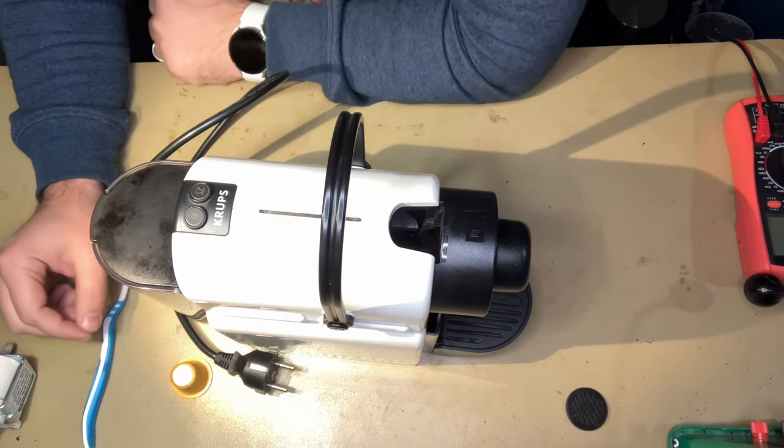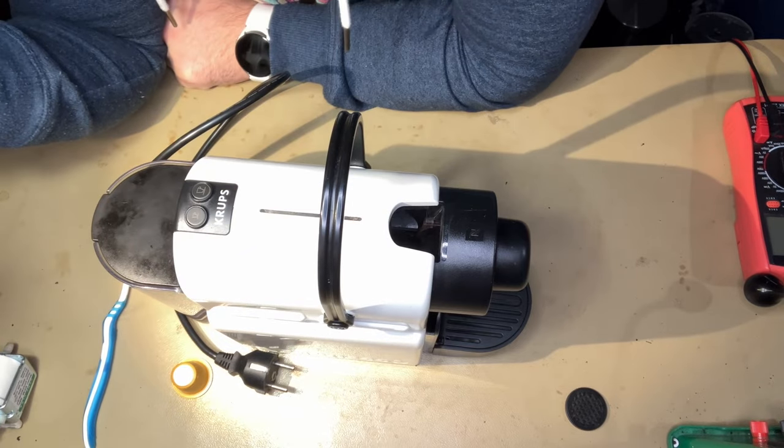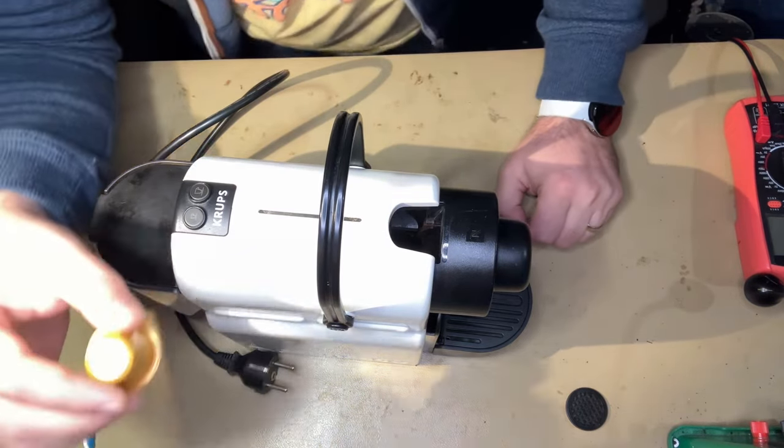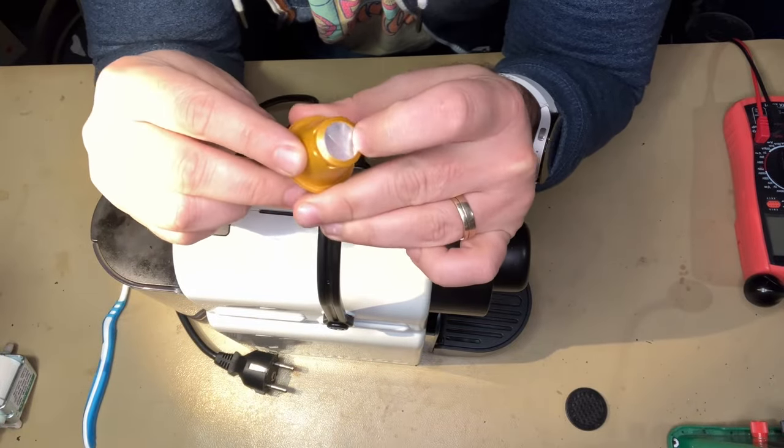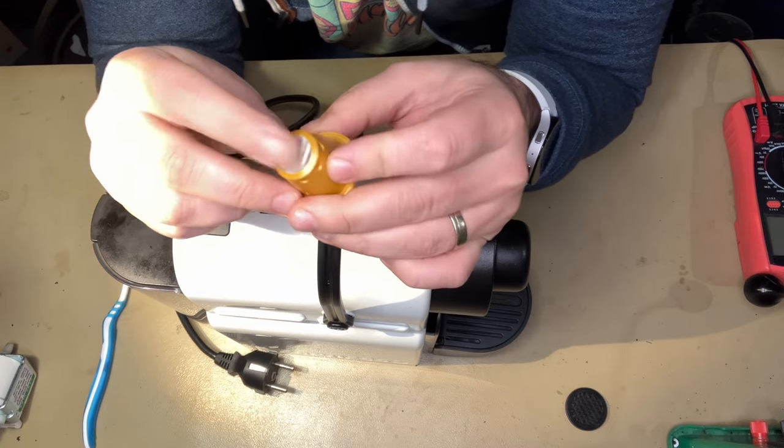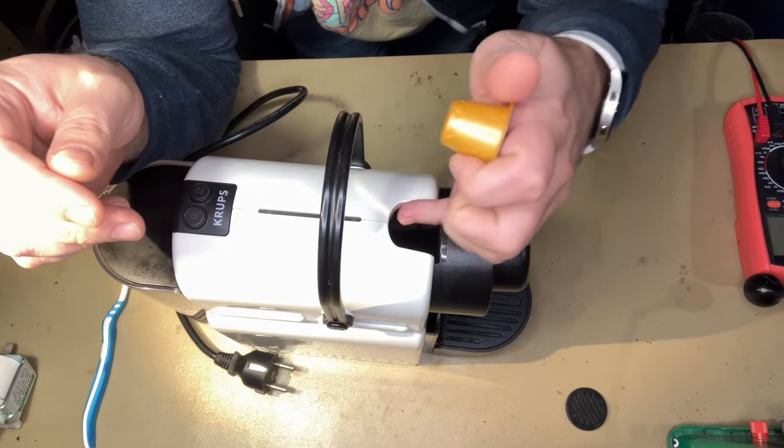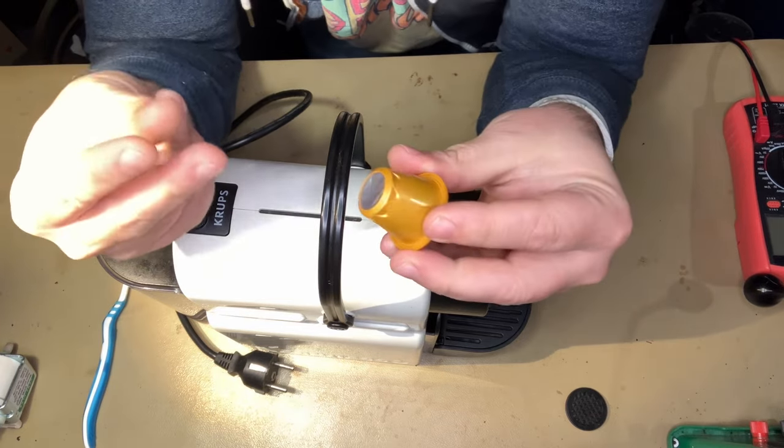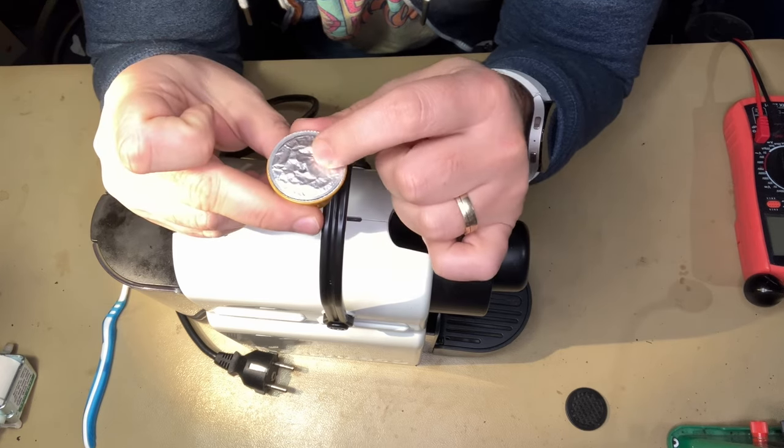And of course, the last part would be to see if this part here is perforated. As I said previously, here inside in the chamber there are three knives that perforate this part. If this is not perforated, of course this will not be perforated.